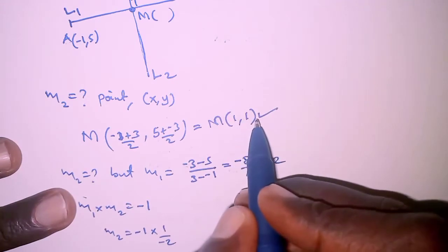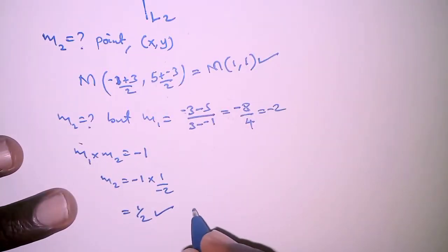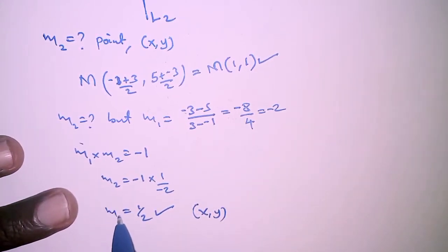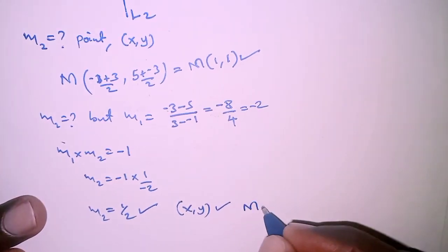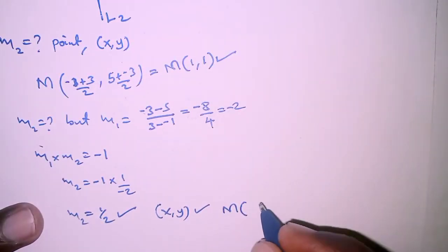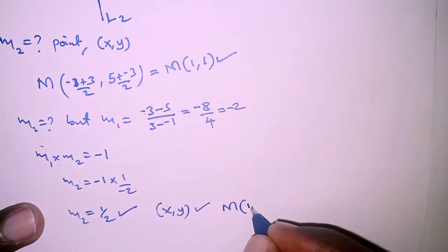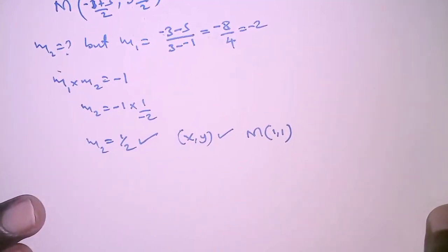So with the gradient of line 2 and a point on the line, we can therefore introduce an arbitrary point (x,y). So we have m2, arbitrary point (x,y), and the midpoint which lies on line 2 also, which is (1,1). Then we can determine the equation of line 2.